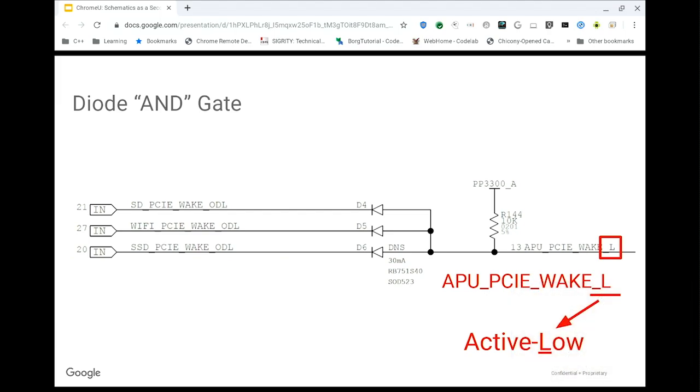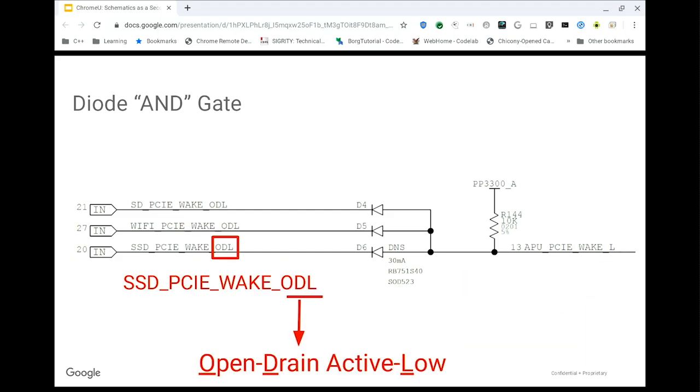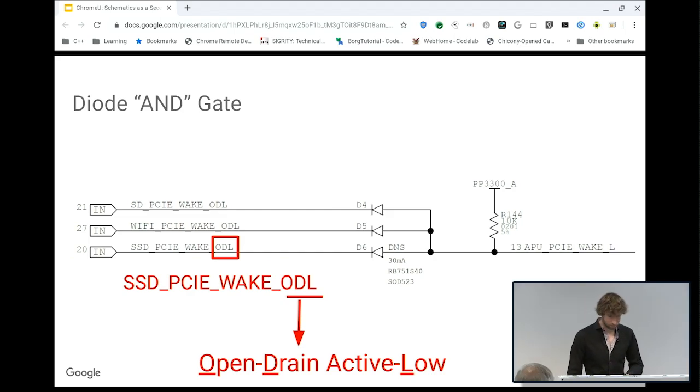In this particular case, you'll see an underscore L. This means that the signal is normally high, and when we do exciting stuff to it, it goes low. This is called active low, hence the underscore L. We actually mix these together, so here we have an open drain active low signal, so we put ODL on it.